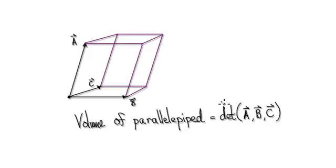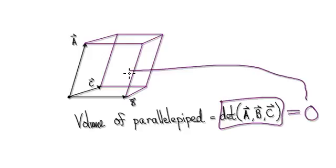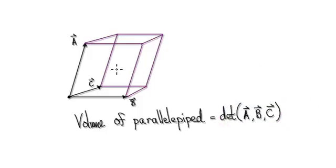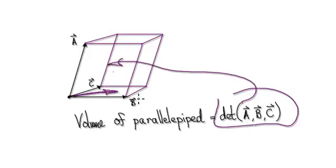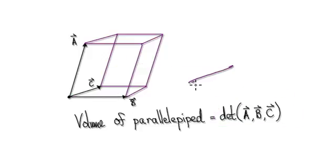If you demand the determinant to be zero, it means that you demand the volume to be zero. Now, if the volume is zero, then the three vectors must lie on a plane, because the determinant gives you the volume. If you demand the volume to be zero, then the three vectors must lie on the plane.